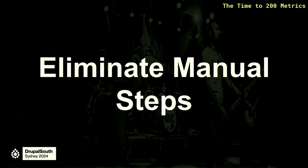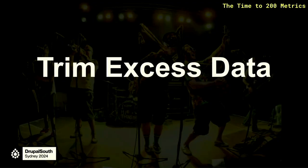It was also about eliminating manual steps — anything from installing dependencies to lengthy processes like installing a package manually, adding an API key. Whatever your ritual might be when you docker compose up, if that's a manual step, maybe you can automate it, because that really eats into your time to 200. Also trimming excess data — excess data means more time to pull that data down or work with it, and results in a slower performing environment. Trimming data slims down the environment and pays dividends when spinning up.